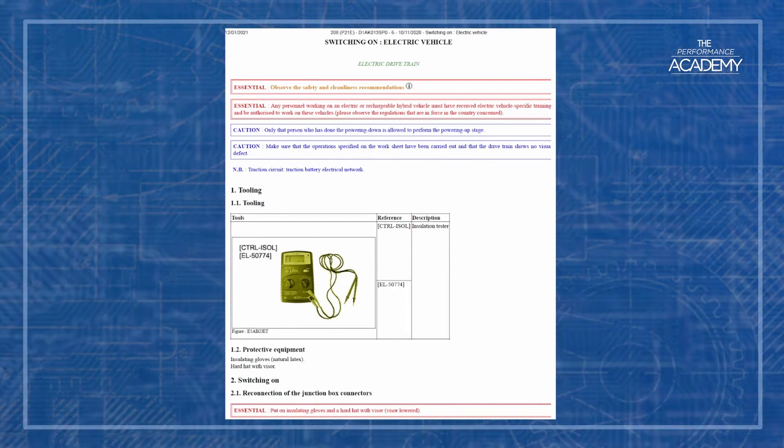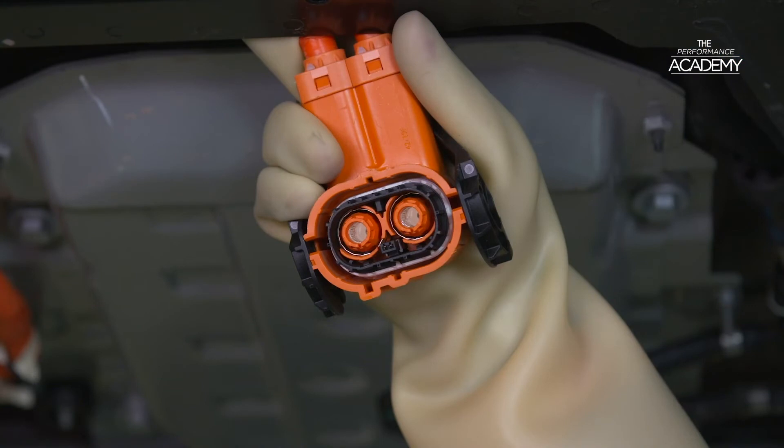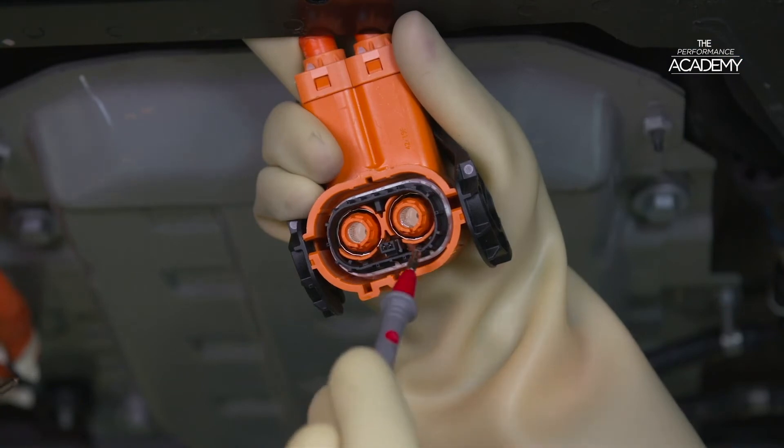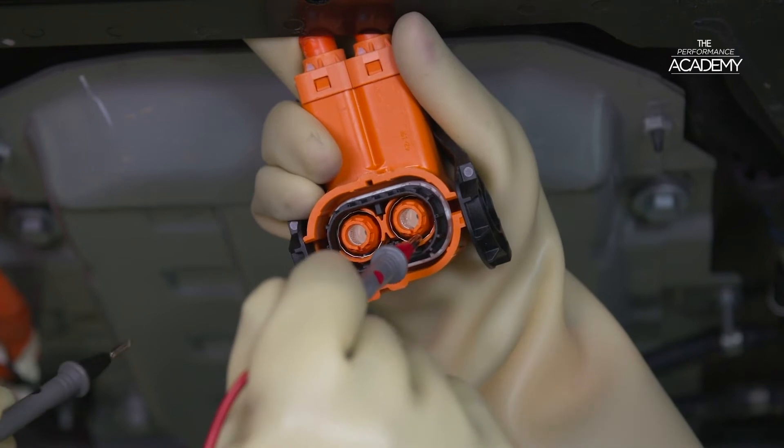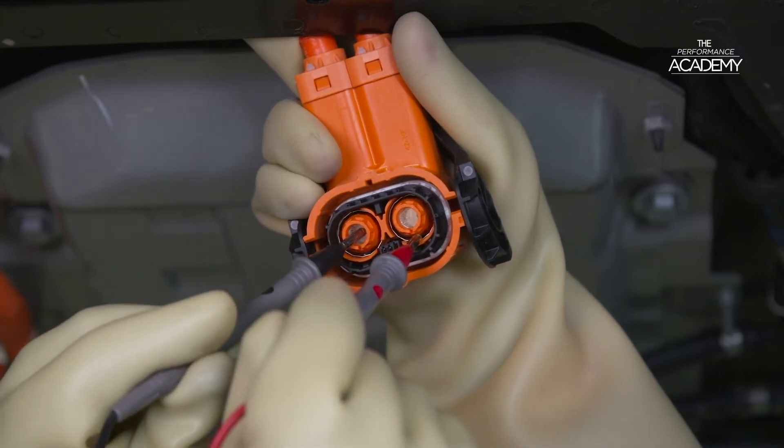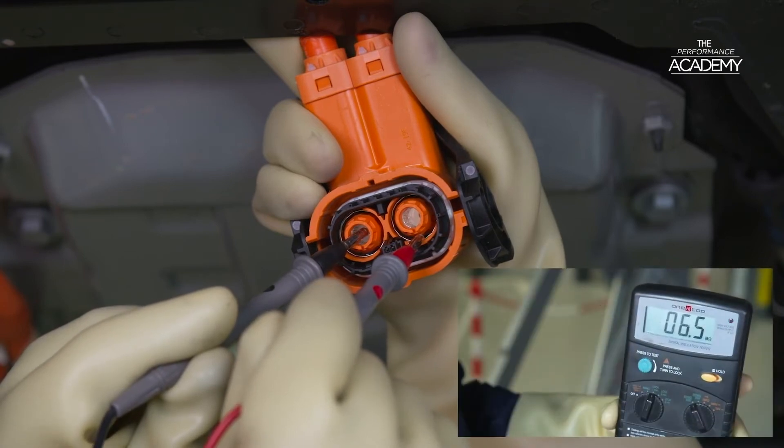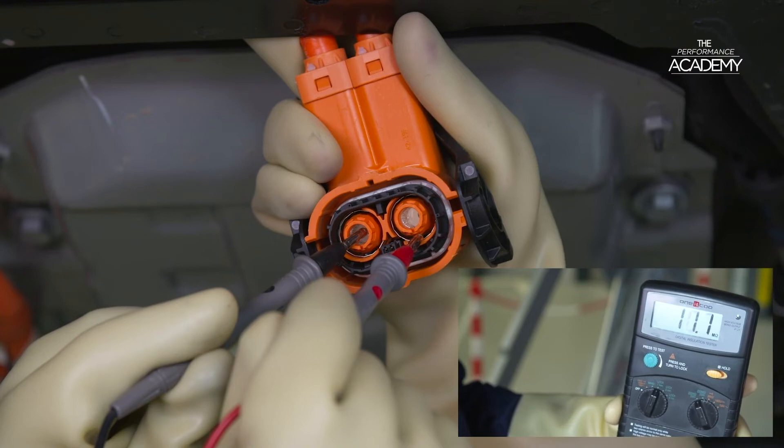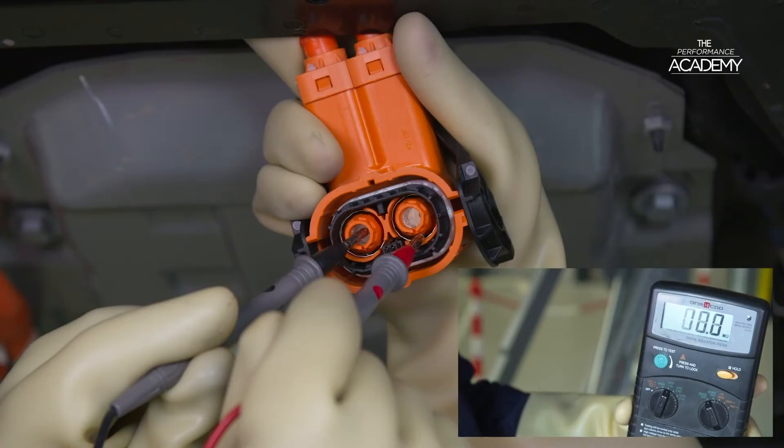Following the instructions in service box it tells us to put the negative probe on the earth at E of the electrical power circuit connector. This is the earth shield or screen which is wrapped around the insulated high voltage supply wires. Put the positive probe on the pin at D of the electrical power circuit connector and this is one of the main high voltage supply pins. Check the resistance value is higher than 2 mega ohms.